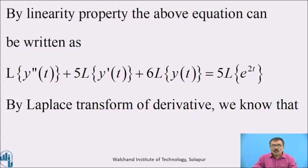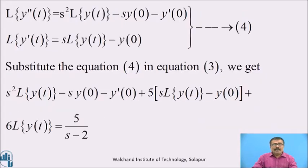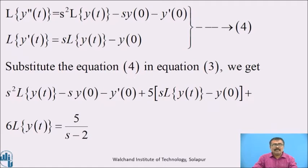Using the Laplace transform derivative formulas: L{y''(t)} = s²·L{y(t)} − s·y(0) − y'(0), and L{y'(t)} = s·L{y(t)} − y(0). Call these equation 3 and equation 4. Substituting equation 4 into equation 3, we get s²·L{y(t)} − s·y(0) − y'(0) + 5·[s·L{y(t)} − y(0)] + 6·L{y(t)} = 5/(s − 2).